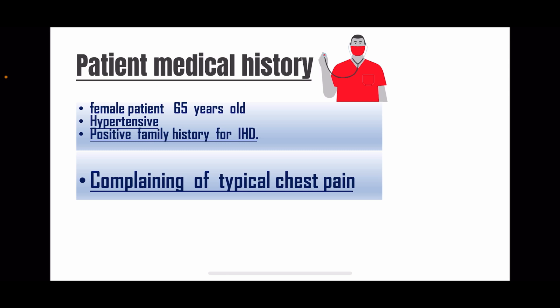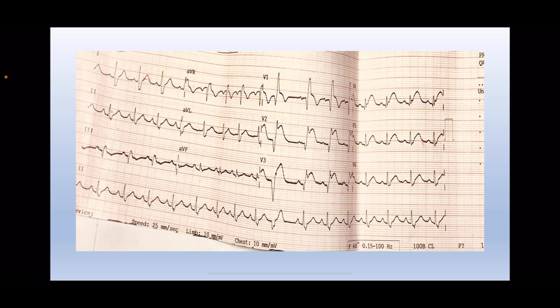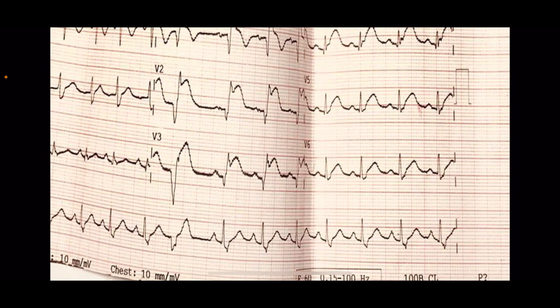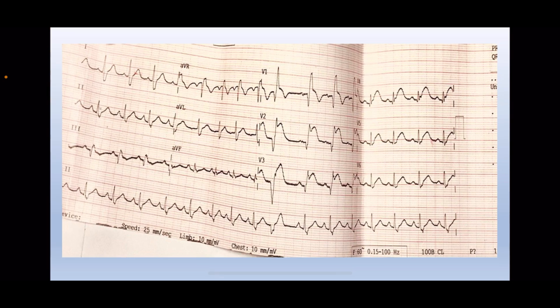Patient medical history: a female patient, 65 years old, known to be hypertensive with a positive family history of ischemic heart disease. She came to the ER complaining of typical chest pain. ECG was done and it revealed anteroseptal myocardial infarction.